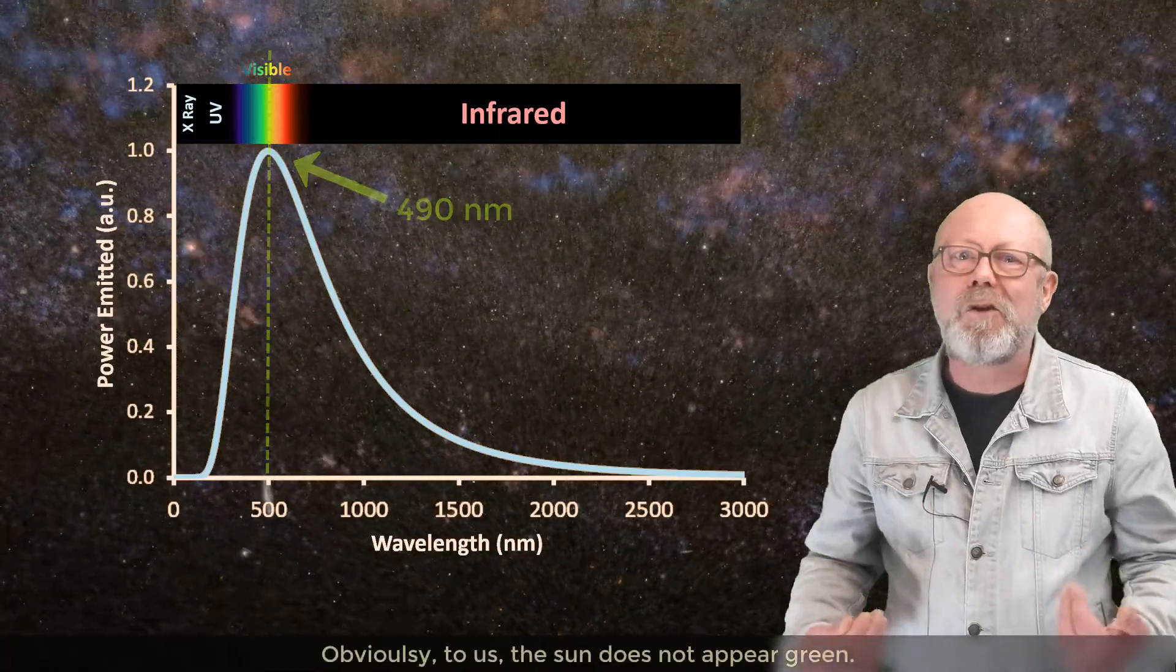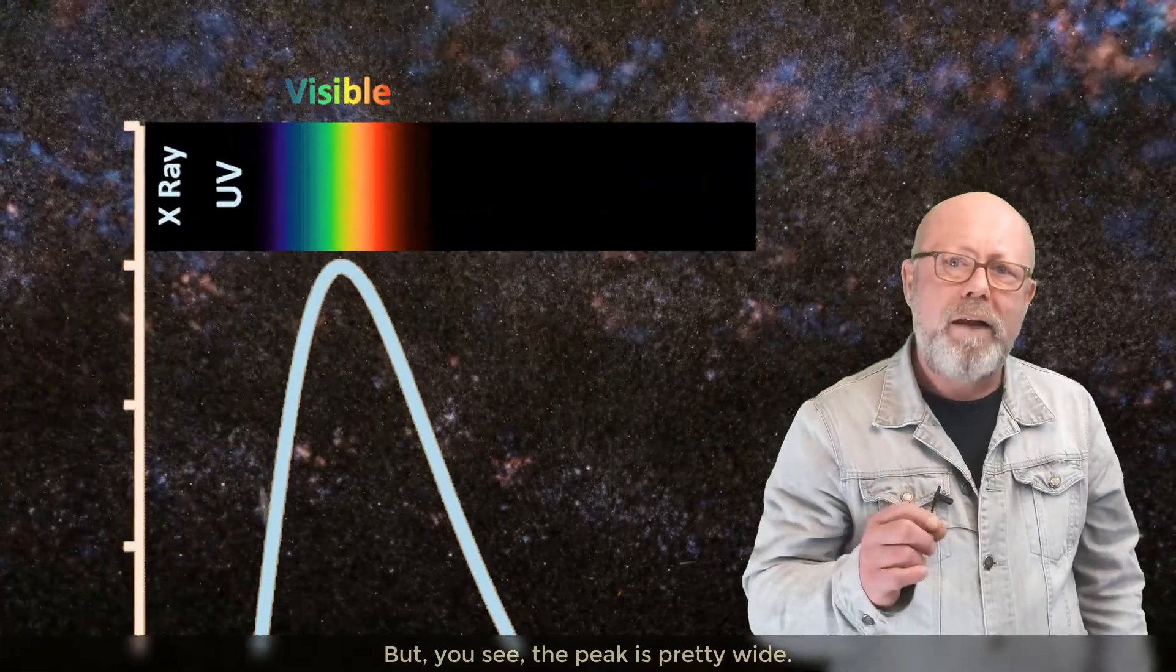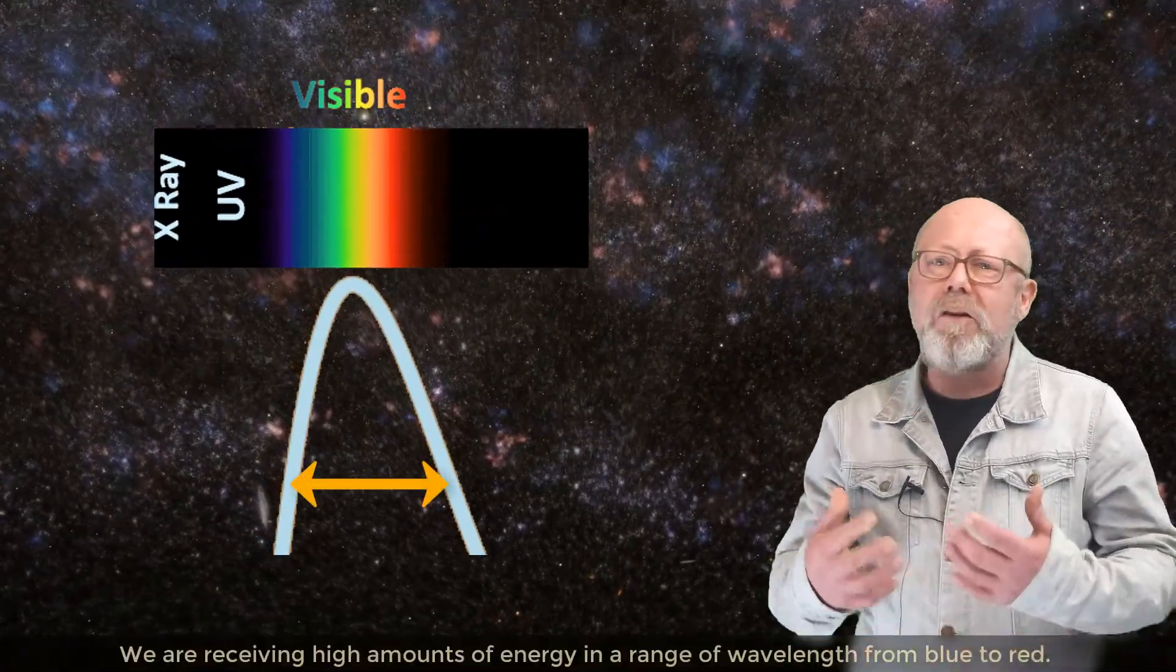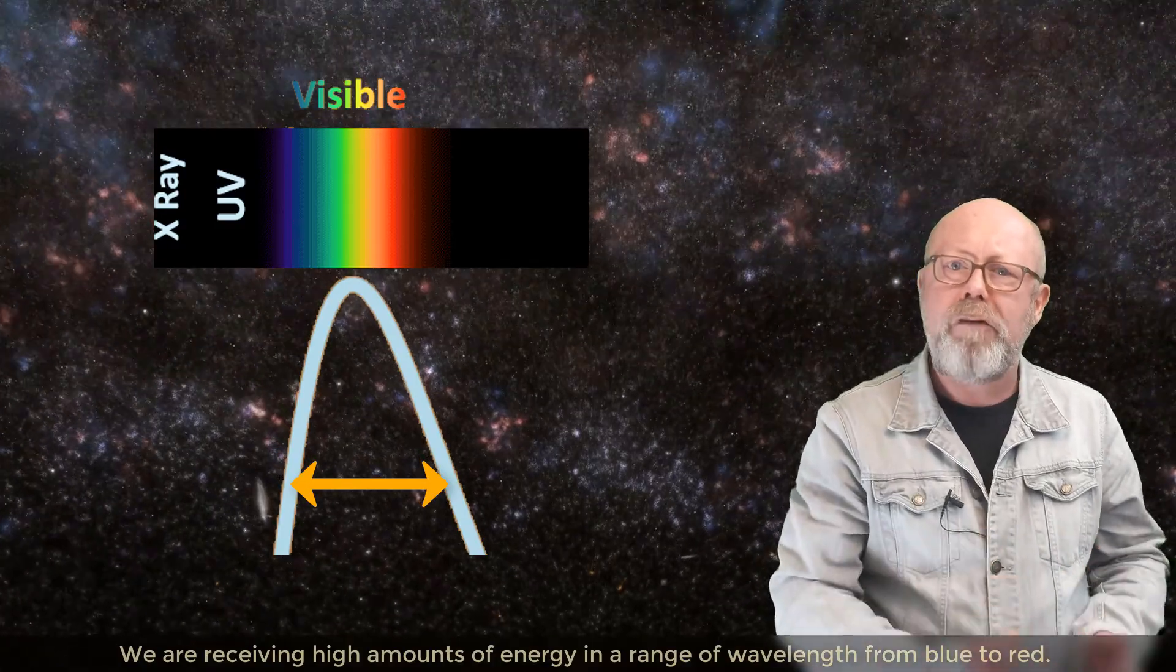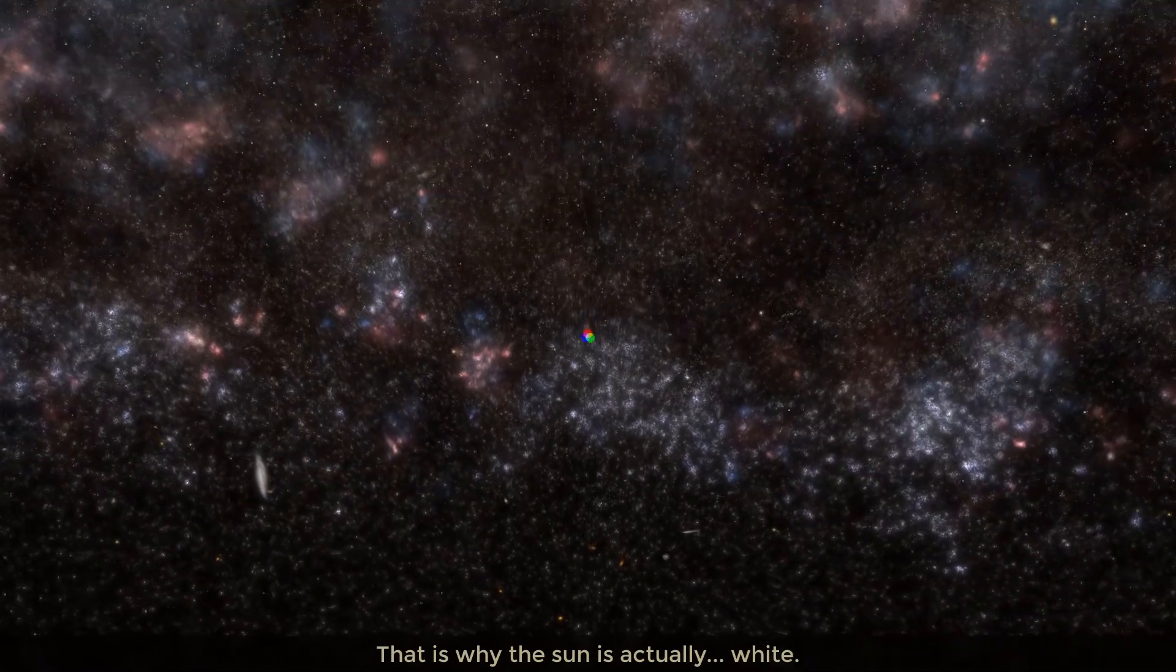Obviously, to us, the Sun does not appear green. But you see, the peak of maximum wavelength is pretty wide. We are receiving high values of energy in a range of wavelengths from blue to red, and all these colors add up. That is why the Sun is actually white.